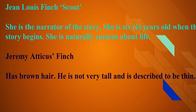Jem, who happens to be Scout's older brother, is described as being a sensitive person. He's very generous and can be temperamental at times, but he's very mature and protective, and also humble. His closest friend is Charles Baker Harris, who he affectionately refers to as Dill. At the beginning of the story, it is mentioned that Jem broke his arm when he was almost 13 years old. His greatest fear was that he would not be able to play football anymore, which he had a great love for.